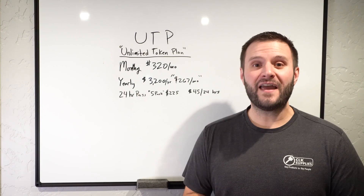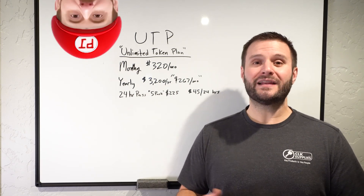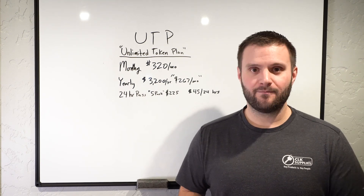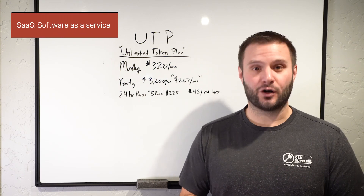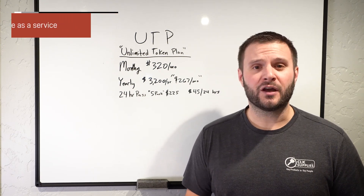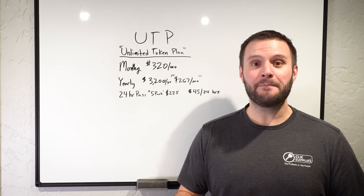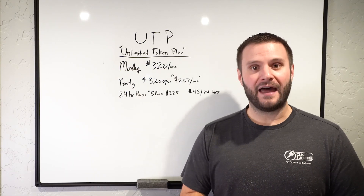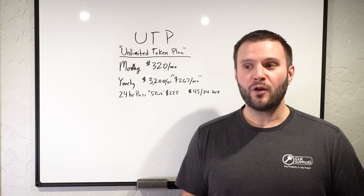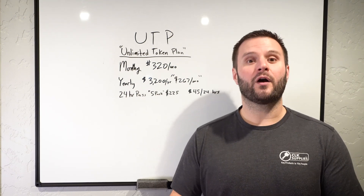Now I want to talk about my favorite part of the Smart Pro, which is the UTP — the Unlimited Token Plan — which means you have unlimited use of the machine for the time set. Essentially, a UTP is a SaaS, a software as a service. The best comparison would be your cell phone: you purchase the phone and then pay every month to use it. The good part is that when new software becomes available, you can download it right onto the machine and use it with no extra fee, because you're paying for a service.